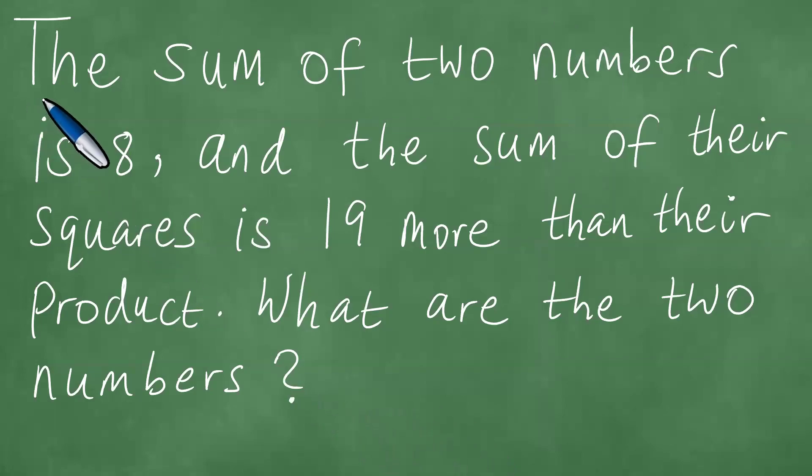Right, we are here and we are dealing with this particular word problem. We note that in this word problem, the sum of two numbers is 8, and the sum of their squares is 19 more than their product. What are the two numbers?